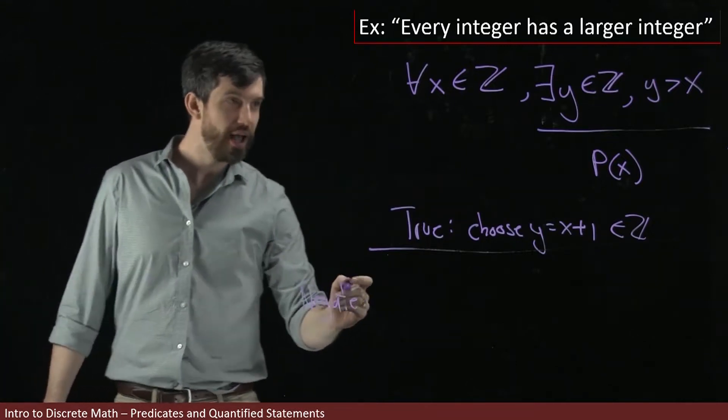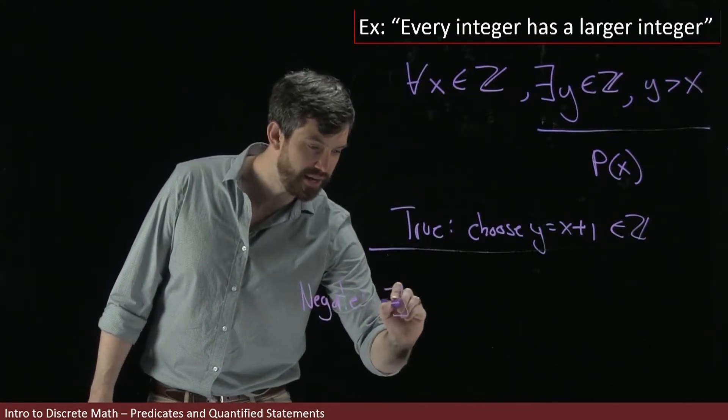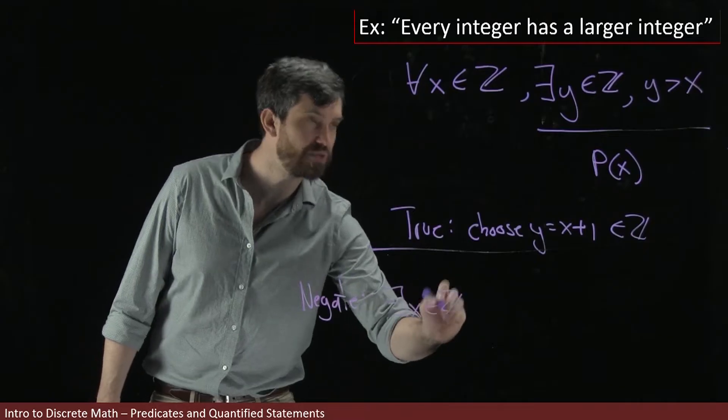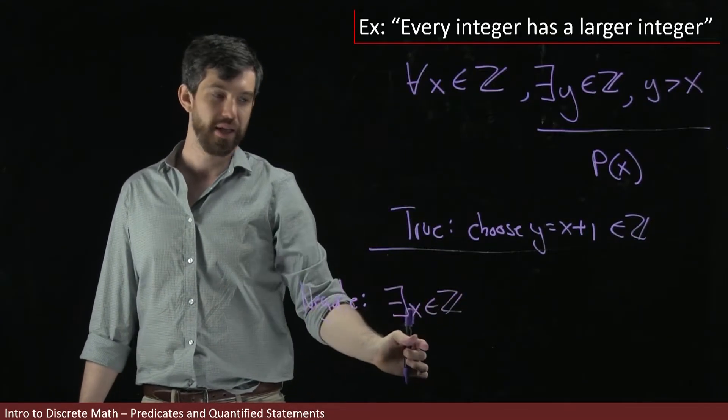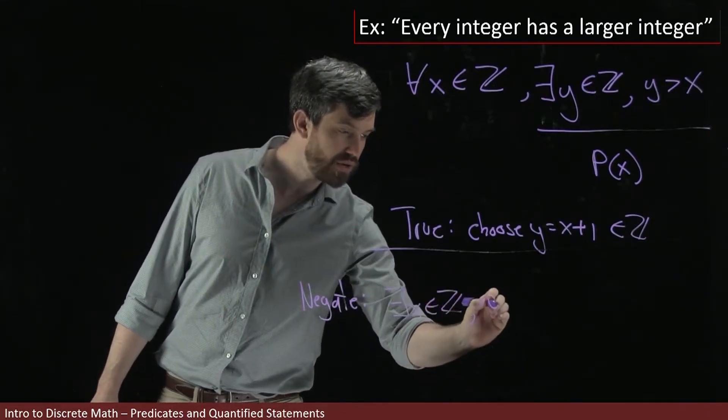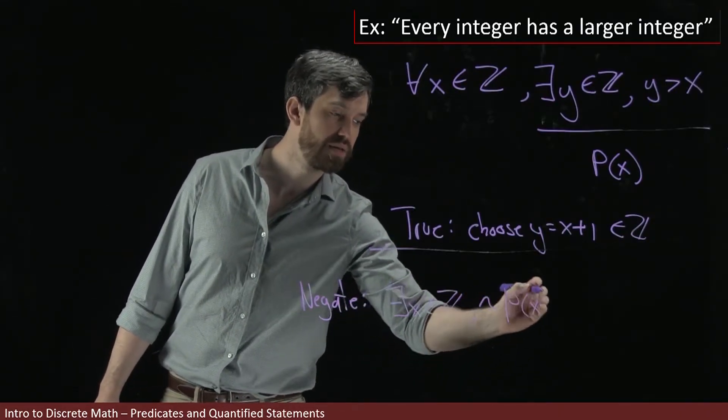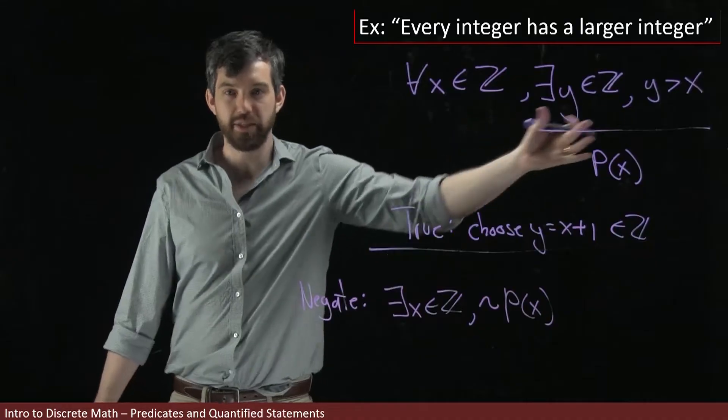So that's what we did before. I'm going to take a there exists an x in the integers. So that's what I'm doing. I'm flipping the for all to a there exists. And then I'm going to write not p of x because I'm negating this particular property.